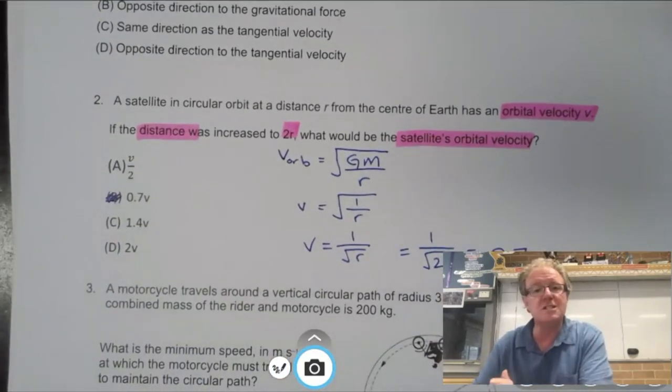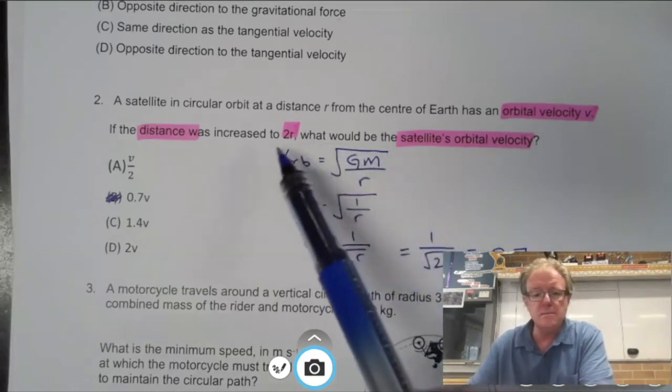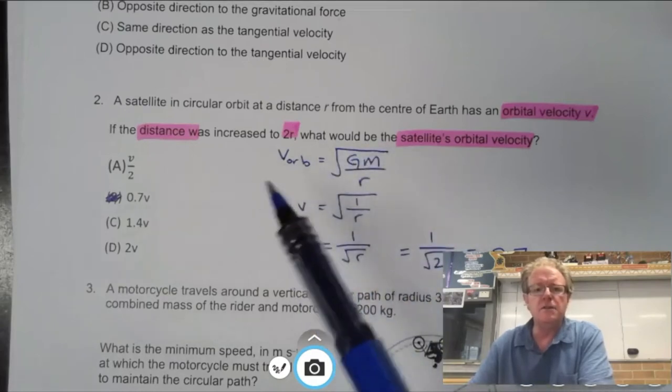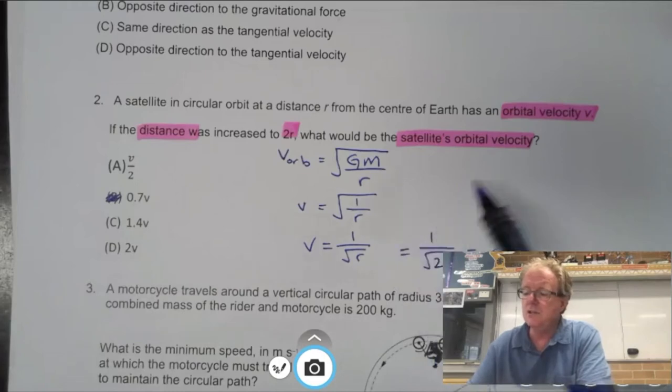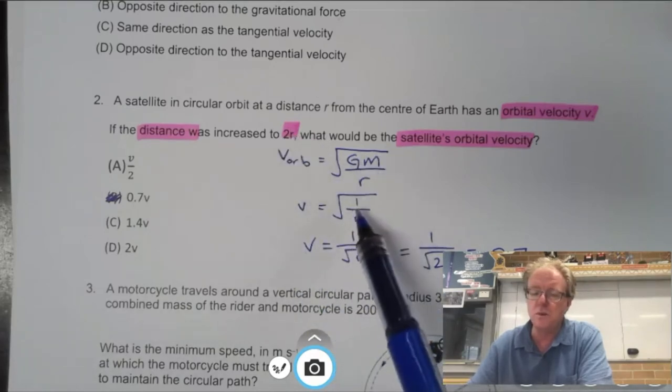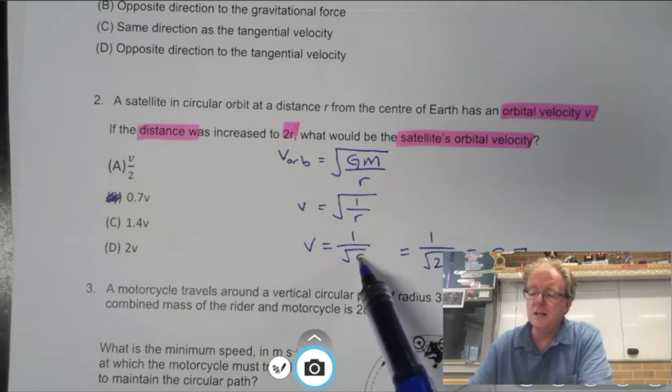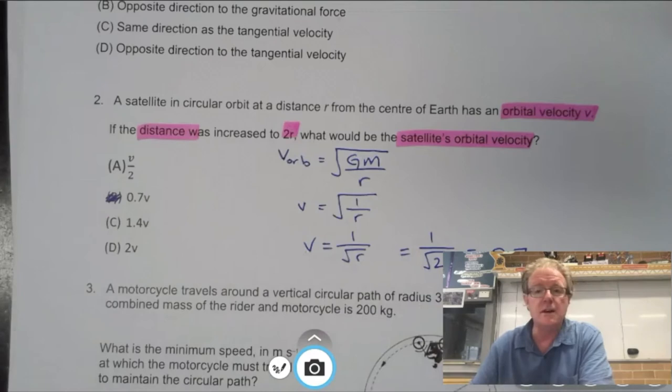This question was first of all testing do you know what orbital velocity is? Second, do you know the equation? And if you don't know the equation, then you can derive it. Then what happens if you look at the relationship between velocity and r when you double r? We made the numerator equal to 1. The 1 that we're looking at here is r, and so therefore we substitute 2 into there. That's how you do that one.